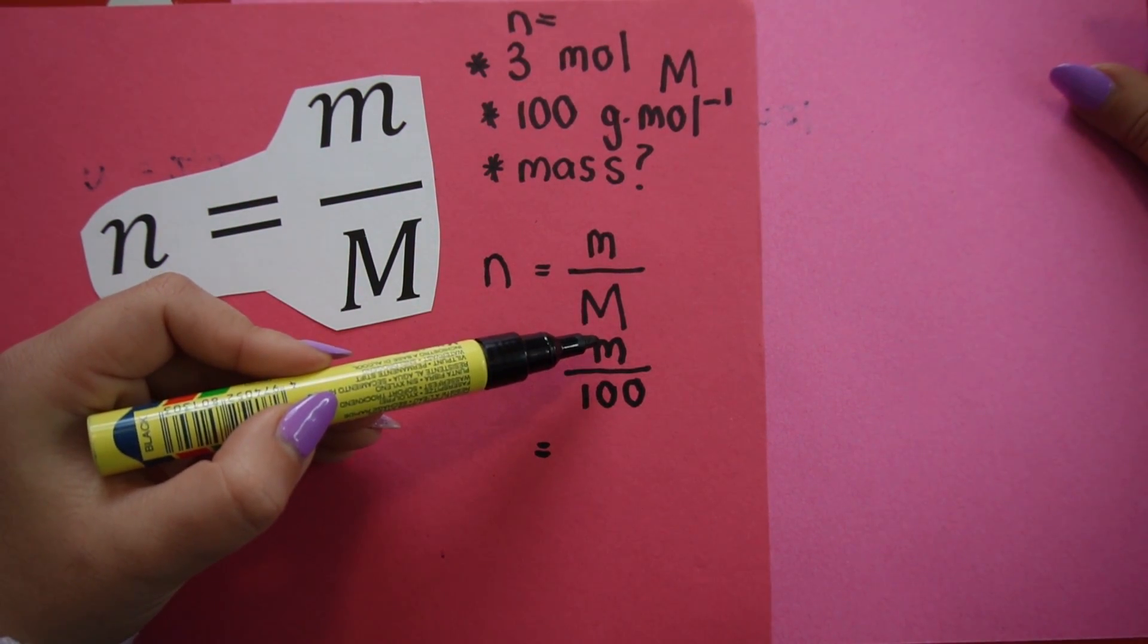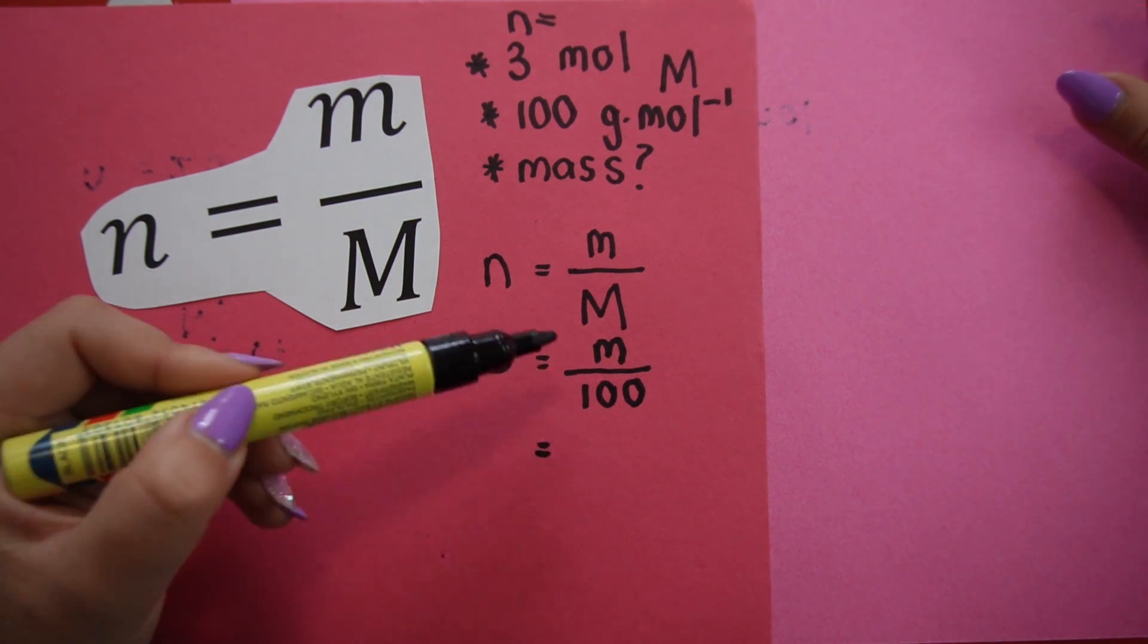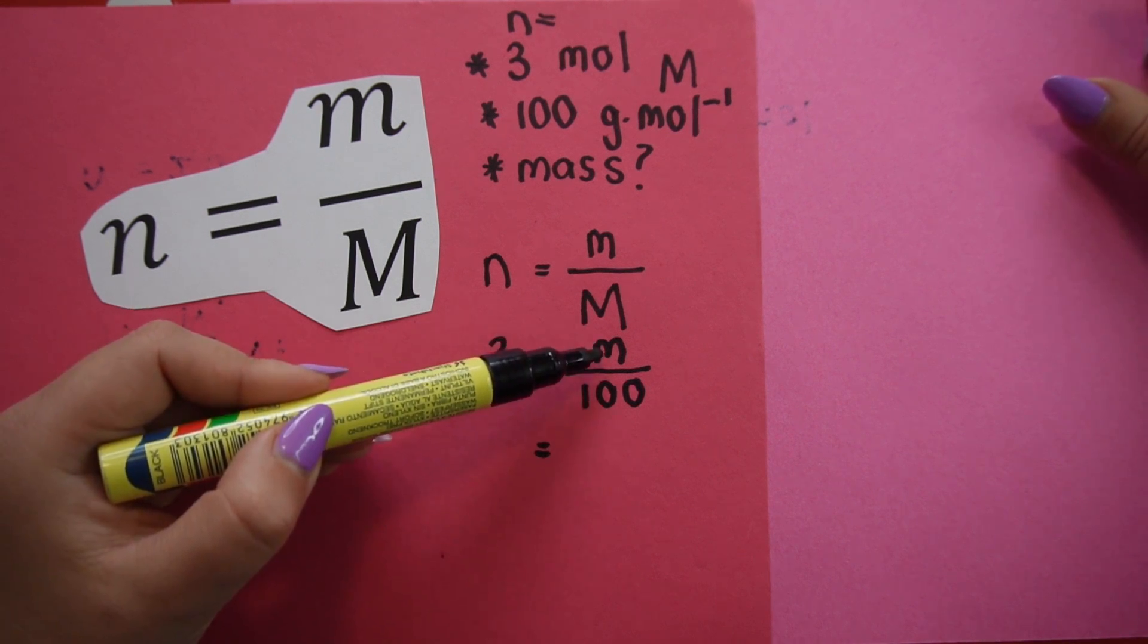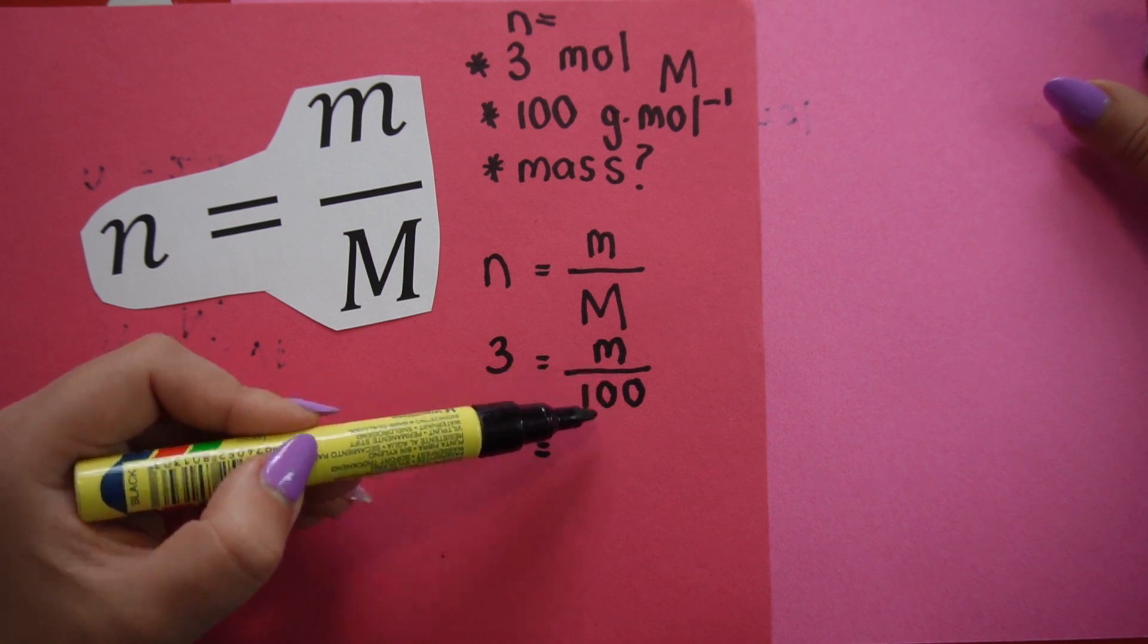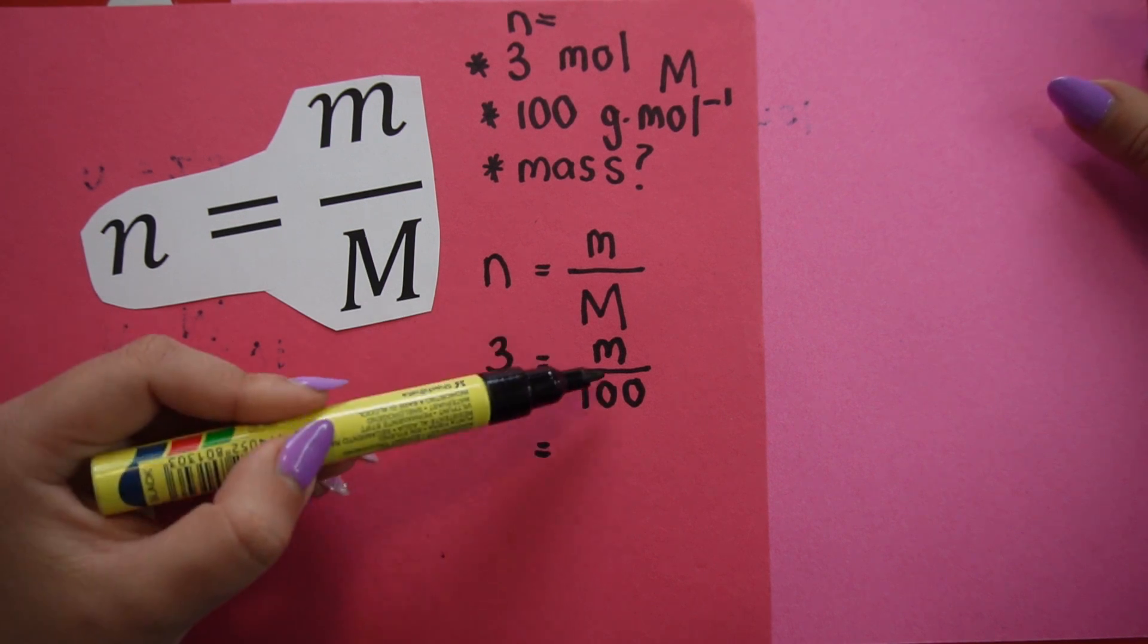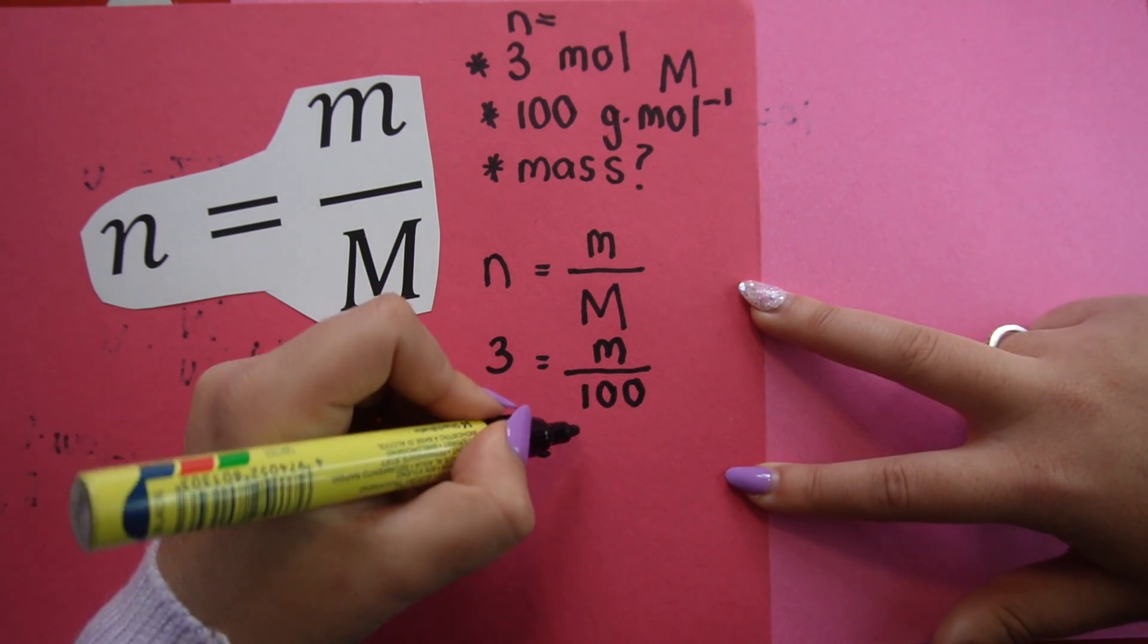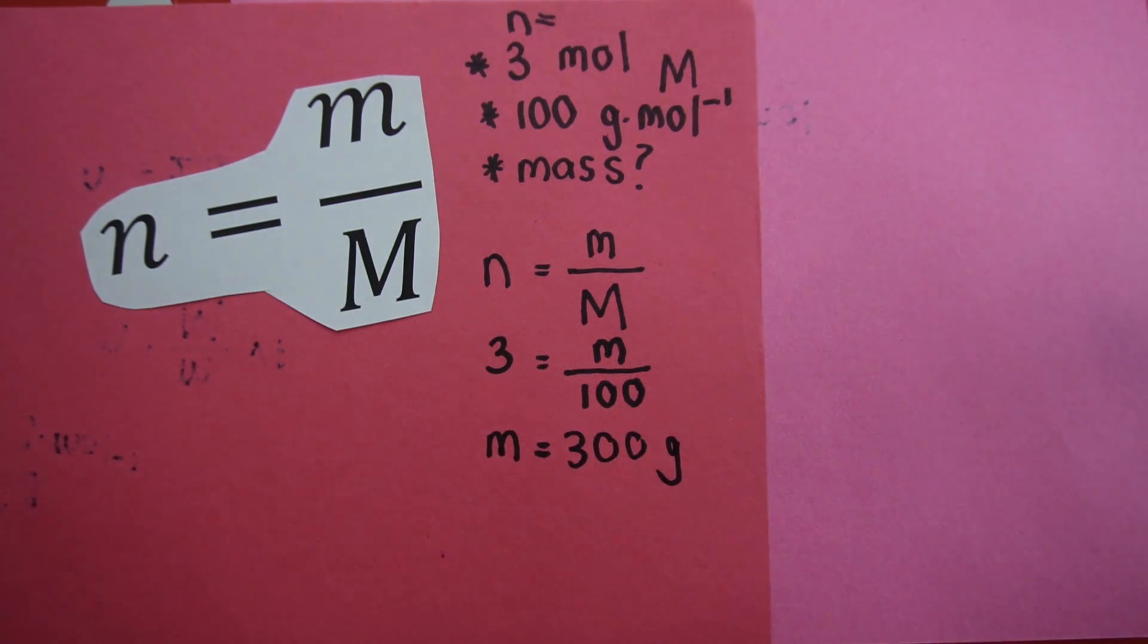So in this case, I'm looking for mass. In order to calculate mass, I simply say three times 100. Remember, we're solving for M. M is my variable. M, baby mass, baby M, mass is being divided by 100. So when we take that over, we do the inverse, times by 100. So mass is equal to three times 100, which is 300 grams. Just be careful of where your variables are and the order of operation that you need to do in order to solve for that variable.